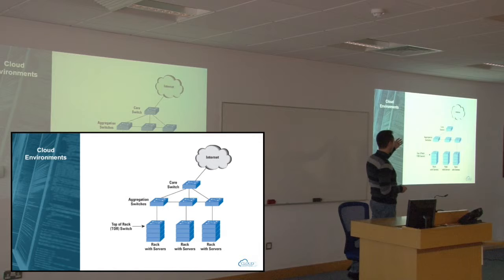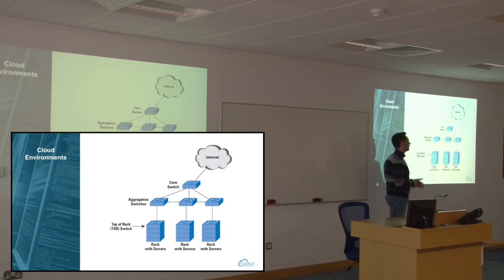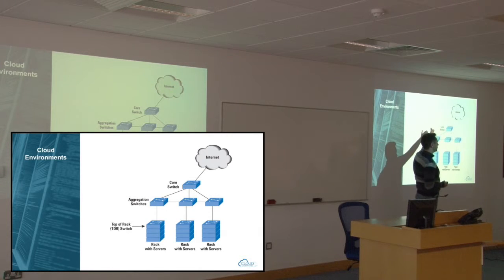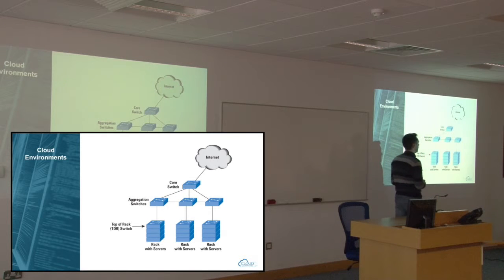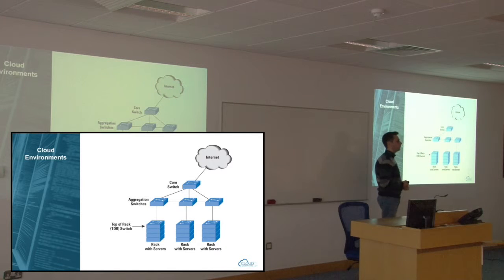This image shows how warehouse scale computing is structured. We have a general core switch, in the second layer some aggregation switches, and in the last level we have the racks of the commodity hardware resources.